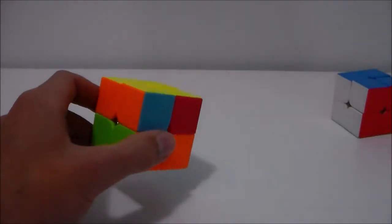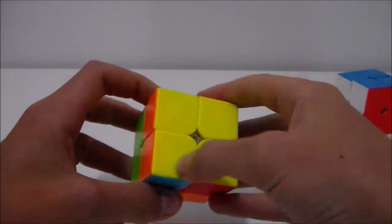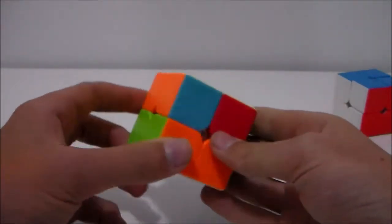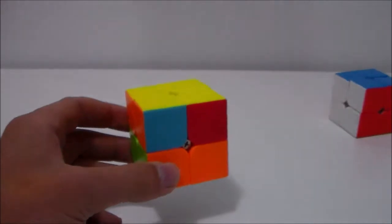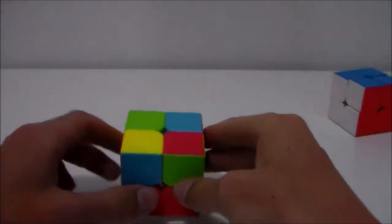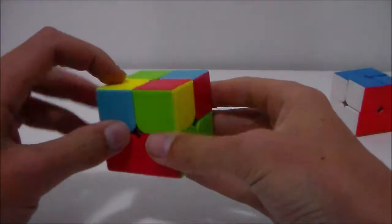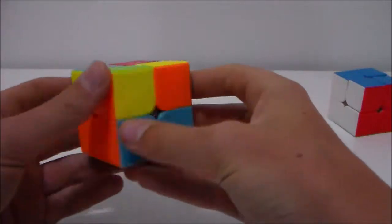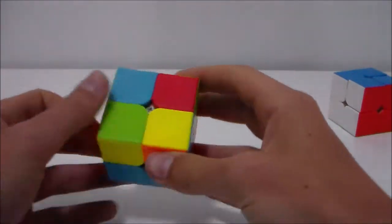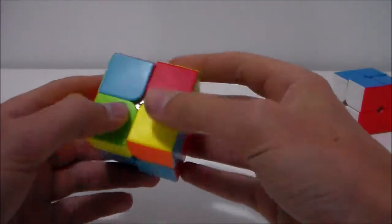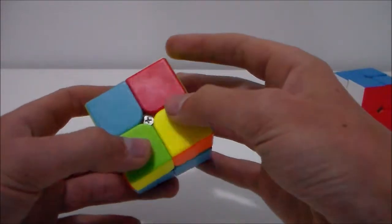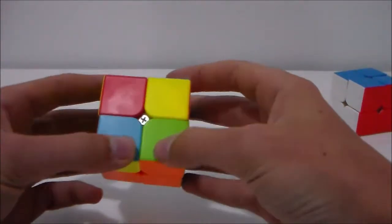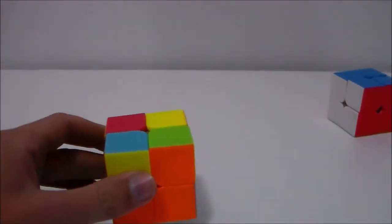The second step to solving the 2x2 is to get the yellow layer completely oriented or also known as OLL. There are three simple cases: the one where there is only one on the yellow layer and then the rest are all on the side, or if there's two on a diagonal or a vertical or horizontal line, or if there are none on the top layer. I'll go through all of these in a sec.